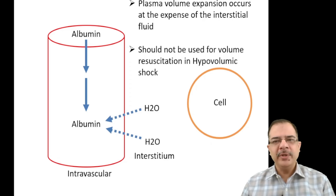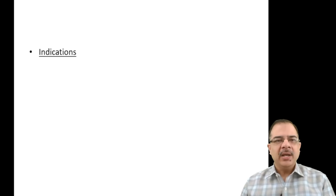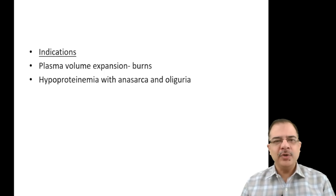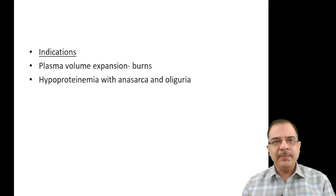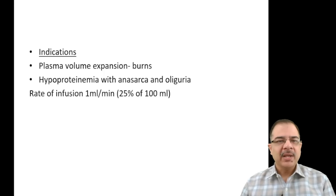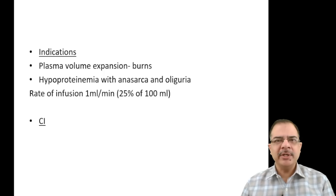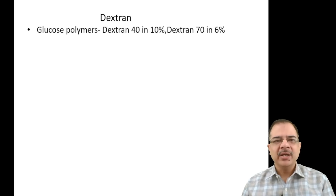Plasma expansion with albumin occurs at the expense of interstitial fluid, so it should not be used for volume resuscitation in hypovolemic shock. Indications include burns with plasma loss, hypoproteinemia causing anasarca, or oliguria as in nephrotic syndrome. Rate of infusion: 1 ml per minute; for 25% albumin 100 ml can be repeated based on response. Contraindications are severe anemia and heart failure.